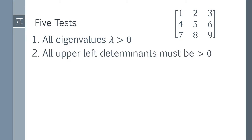The second test is that all of the upper left determinants must be greater than zero. This is called Sylvester's criterion. In practice, you look at all of the sub-matrices starting with the top upper left element, find that determinant — in this case it's just one — then find the determinant of the two-by-two system in the top left corner, and keep going until you reach the whole matrix. If every single one of those determinants is greater than zero, you have a positive definite matrix.